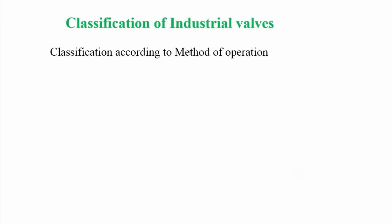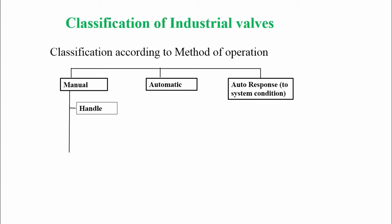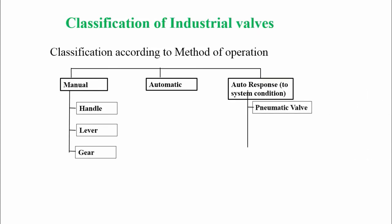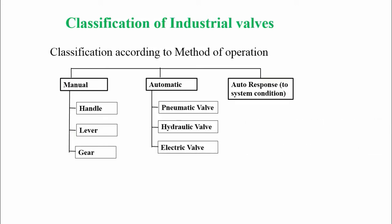Now, classification according to the method of operation. We can classify all industrial valves into three main subcategories: manual valve, automatic valve, and auto-response valve. Manual valves also have a few subcategories: handle valve, lever valve, and gear valve. Automatic valves have three subcategories: pneumatic valve, hydraulic valve, and electric valve. Auto-response valves have two types: PSV valve and check valve.